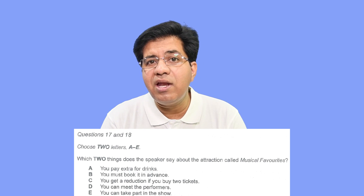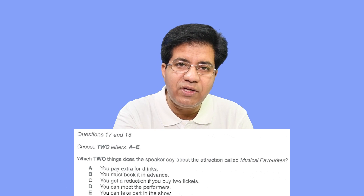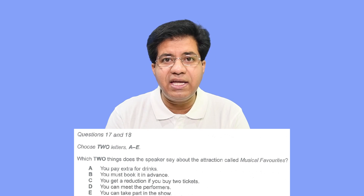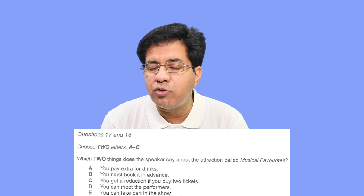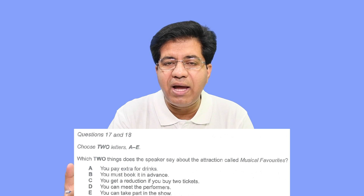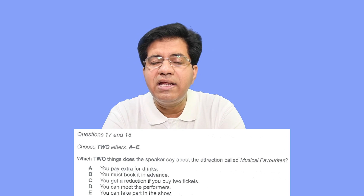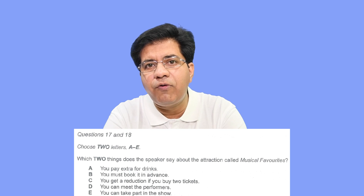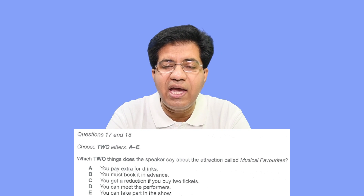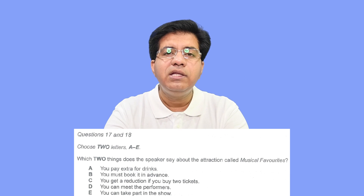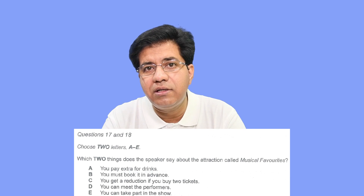Option E: 'you can take part in the show.' If they say you can also participate or you can be part of the show, then it is the right answer. If they say you cannot participate but you may enjoy it by watching, it's not correct. Remember: the option which is ignored is out of question; the option spoken of oppositely is also out. They will speak about all five options in any order, not necessarily A then B then C, which makes it more confusing.